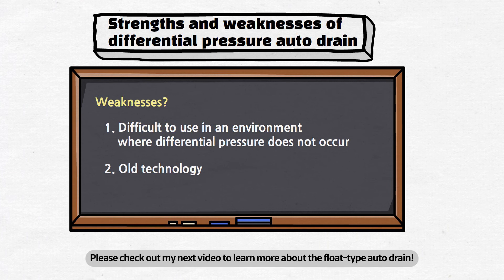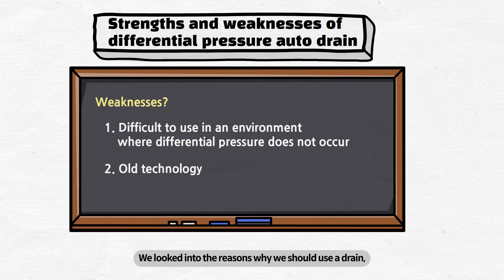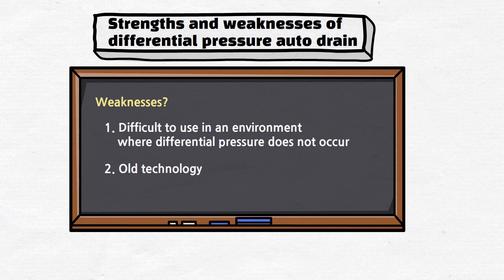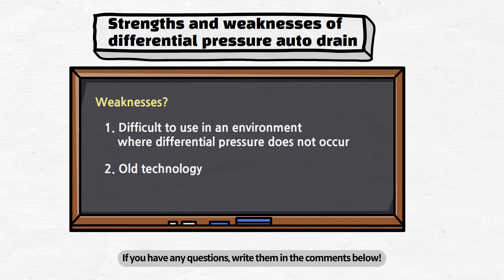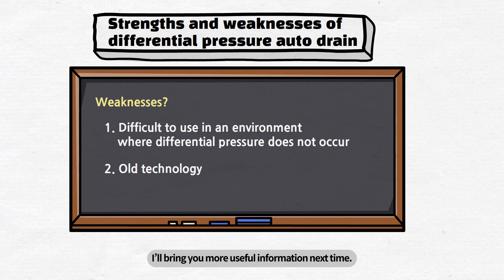Please check out the next video to learn more about the float type auto drain. Here ends today's topic. We looked into the reasons why we should use a drain, the structure and operating principle of the differential pressure type auto drain, and the strengths and weaknesses. In the next video, we will talk about the float type drain. If this video helped you, don't forget to subscribe and like. If you have any questions, write them in the comments below. I'll bring you more useful information next time. Bye!